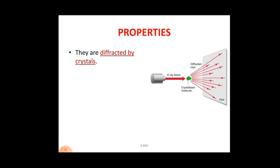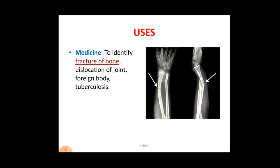X-rays are also diffracted by crystals. When x-rays pass through a crystal, they spread out based on the crystal's lattice organization and molecular design. This is known as diffraction.